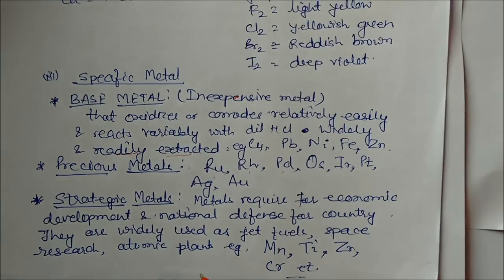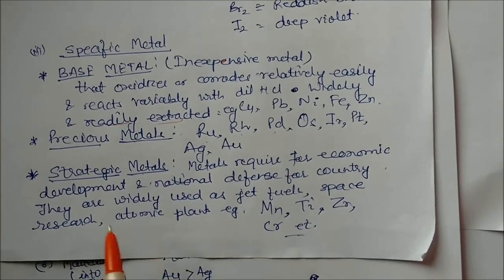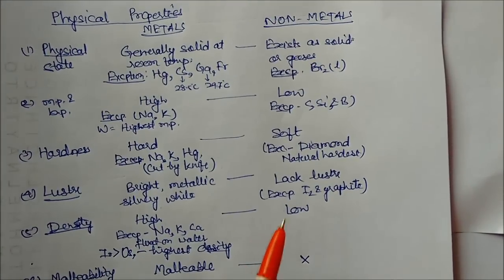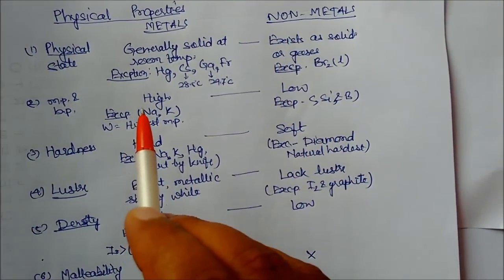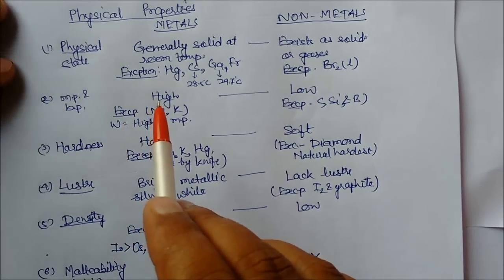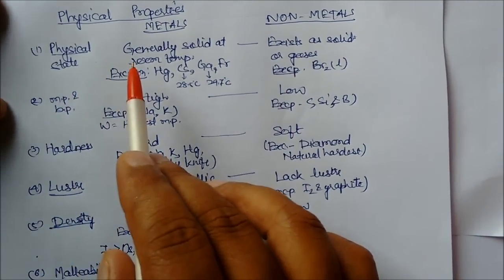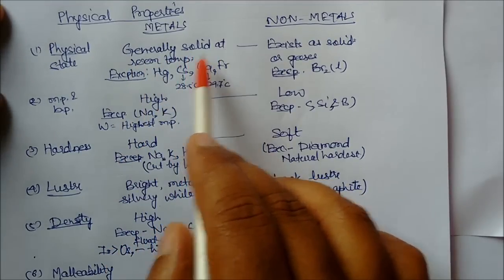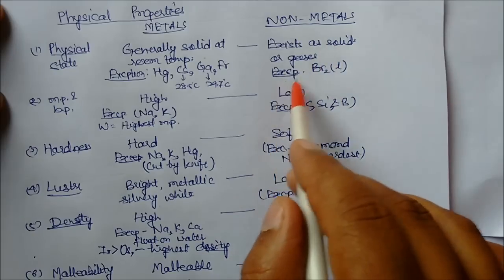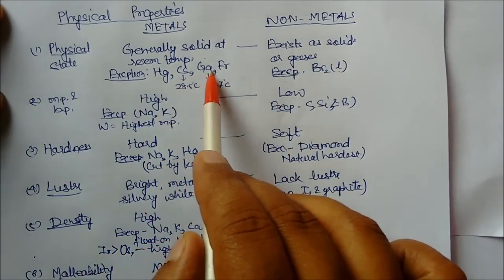Physical properties of metals and nonmetals: physical states—generally metals are solid at room temperature, but nonmetals exist as solids or gases both. Exception is bromine. Some exceptions for metals are mercury, cesium, and gallium.